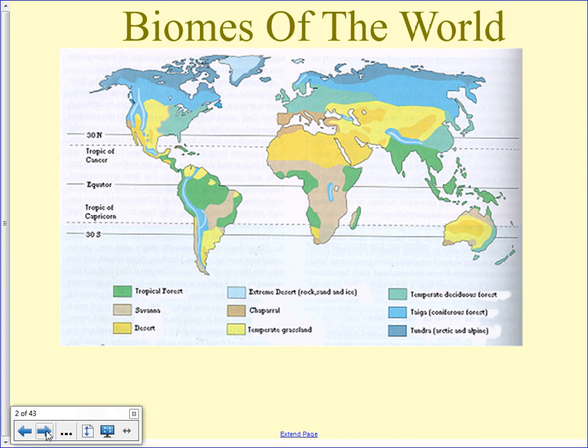Next we'll look at desert. There are really three kinds of desert: extreme desert, hot desert, and cold desert. Deserts do appear in North America — Southern California, Arizona, places like that — and those are a much colder desert. We also see them behind the Himalayas. Deserts can occur not just in really hot areas but also in cool areas.